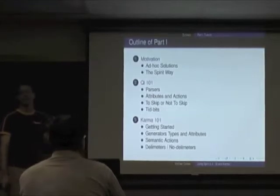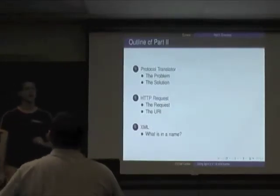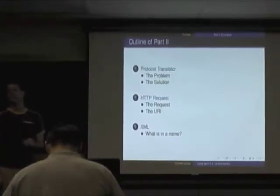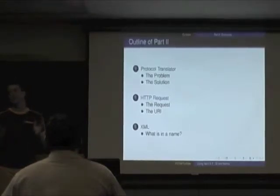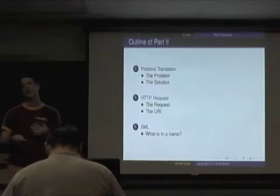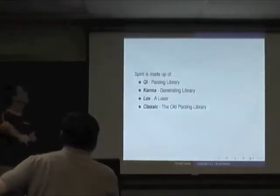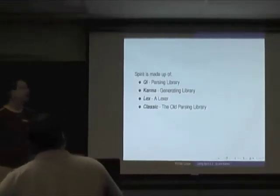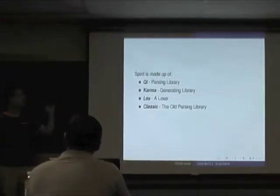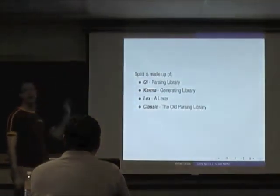We'll go over the basics of Ki — we have naming problems, it's Chi, or Ki — and Karma. Then we'll look at some examples. There are three examples; we'll definitely not get to all of them. Spirit is made up of four parts: Ki is the parsing library, Karma is the generating library, there's a lexer, and Classic, which is prior to the 2.0 release. Today we'll talk just about Ki and Karma.